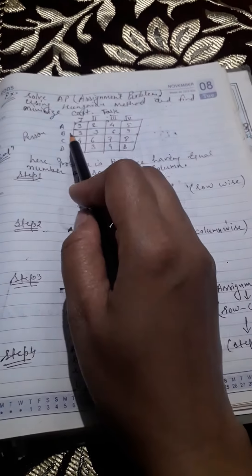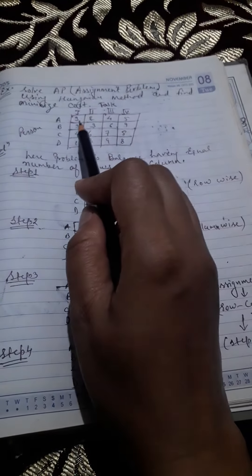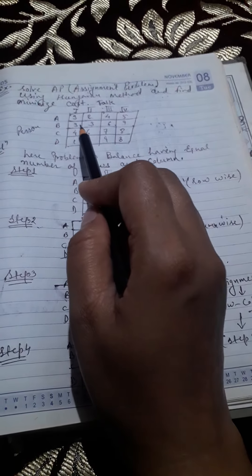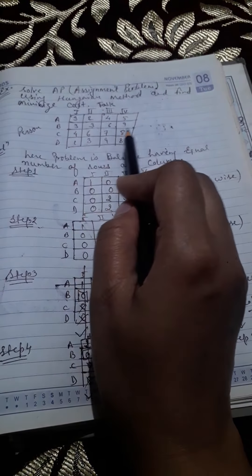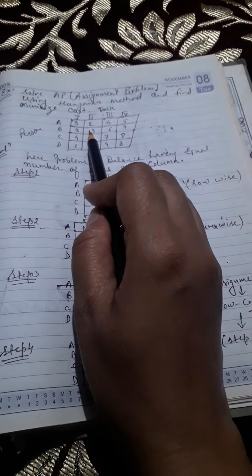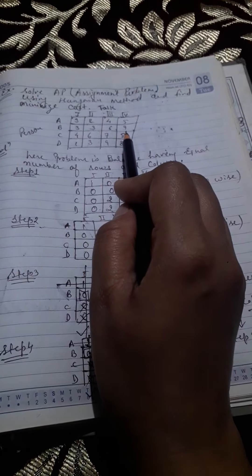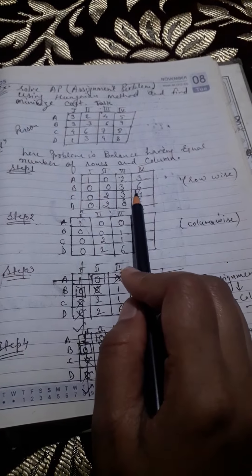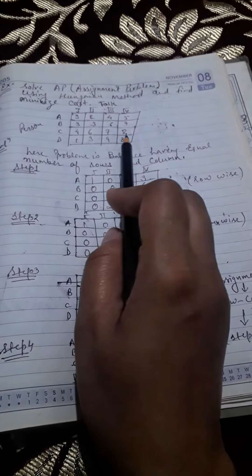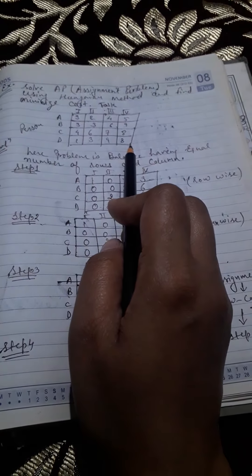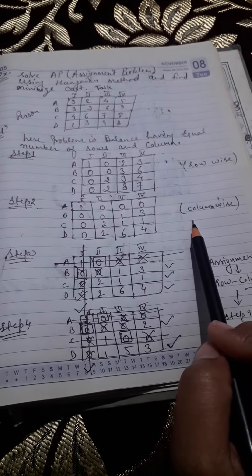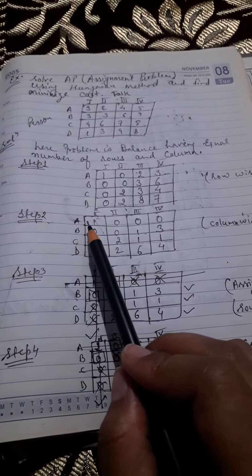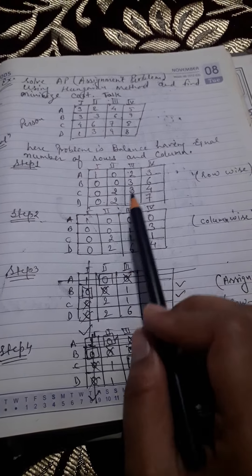Similarly, from the second row select the least number which is three, then subtract three from each element of that row: three minus three, three minus three, six minus three, and nine minus three — giving zero, zero, three, and six. The same operation is performed for the C and D rows. This completes the row-wise step.